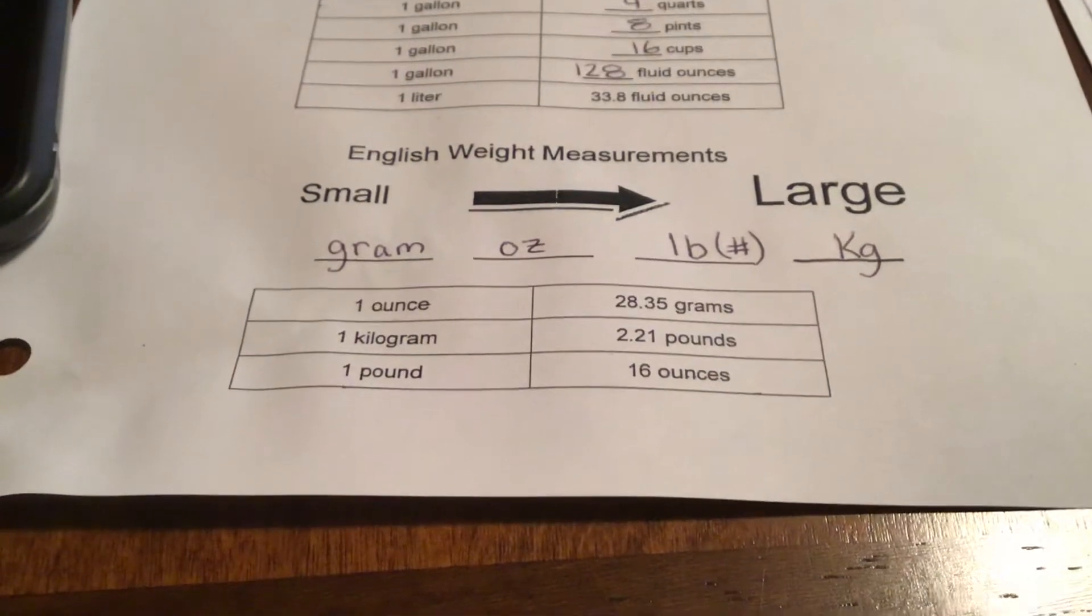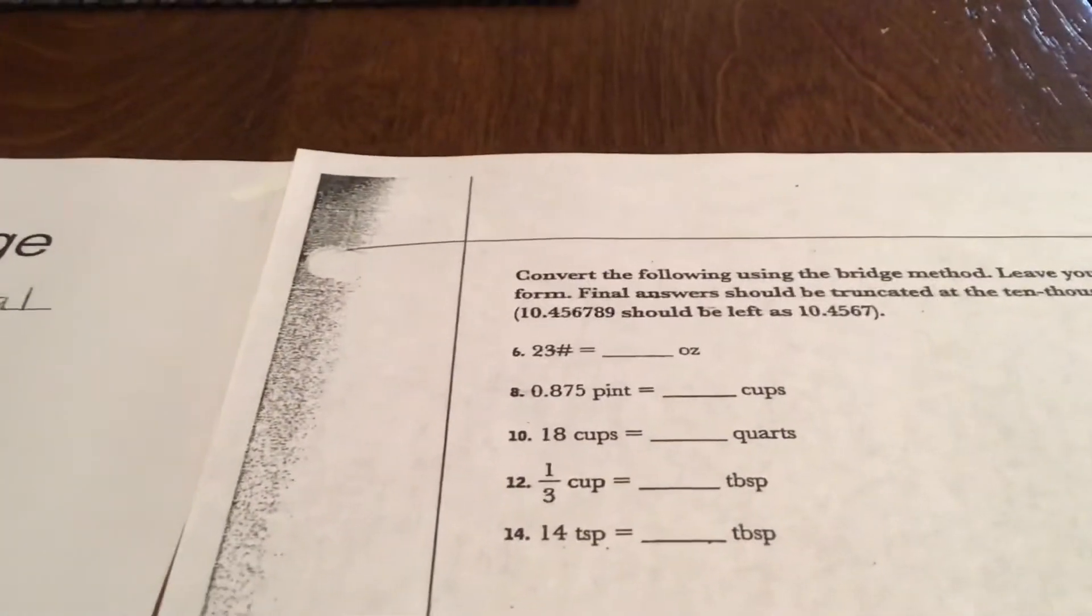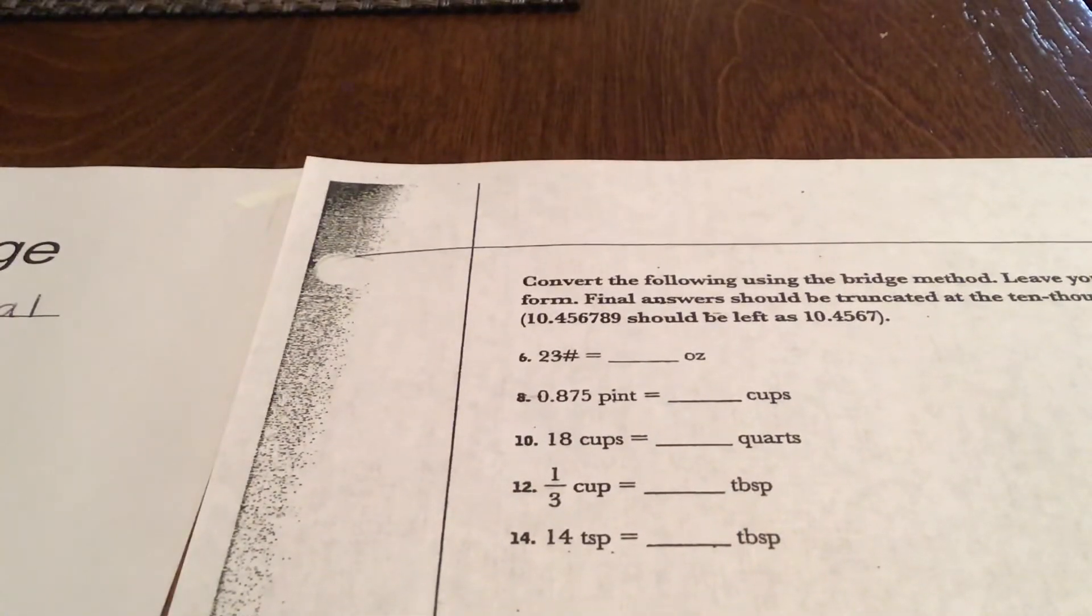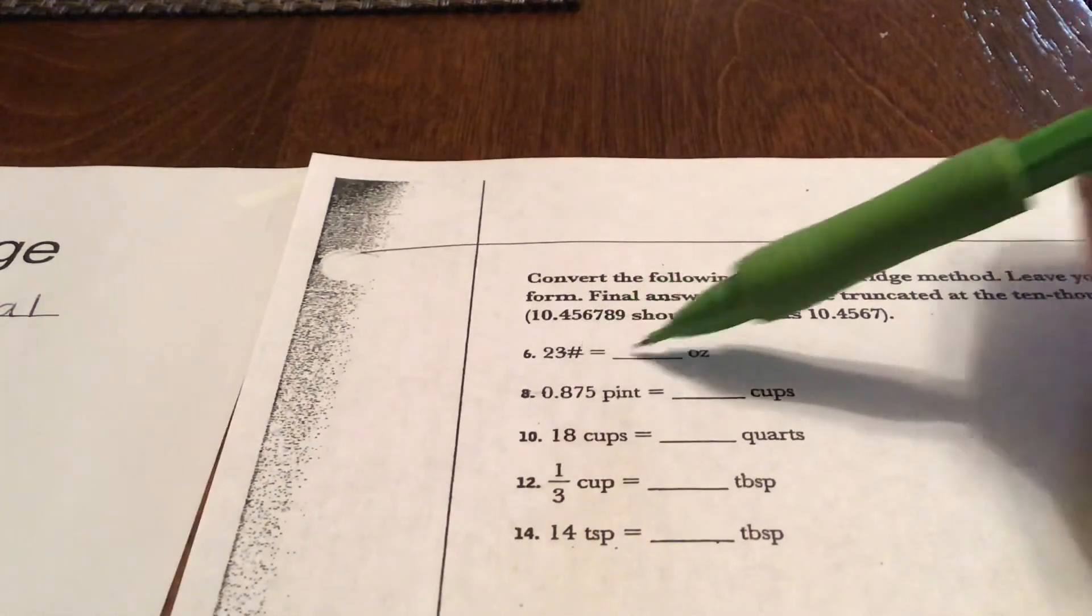So our second page, you'll have some examples here. In this first example, I know it's number six but I eliminated some of the ones I didn't like. A pound is larger than an ounce.